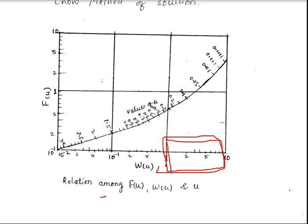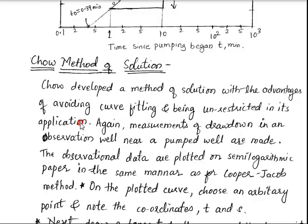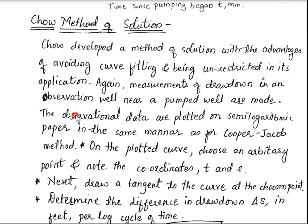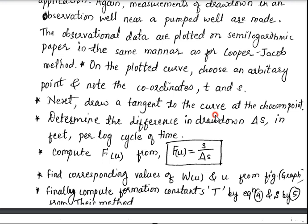These are the different methods given by three scientists: the Theis method, the Cooper-Jacob method, and Chow's method of solution. All three are important — you need to remember the equations, the graph, and the procedure to find the values of S and T for each method.